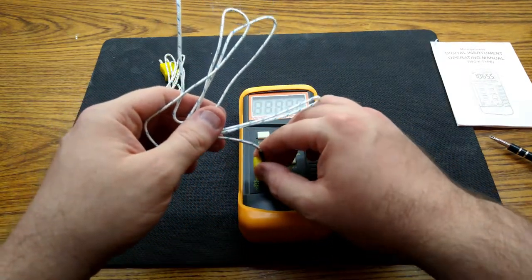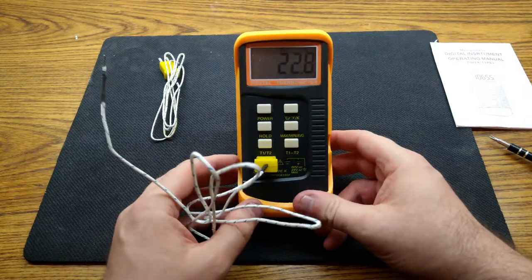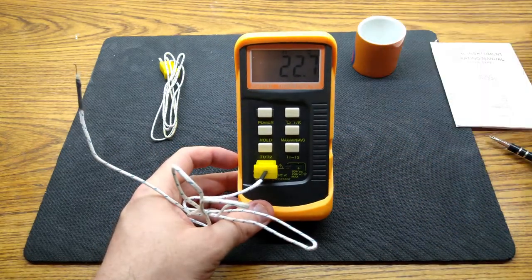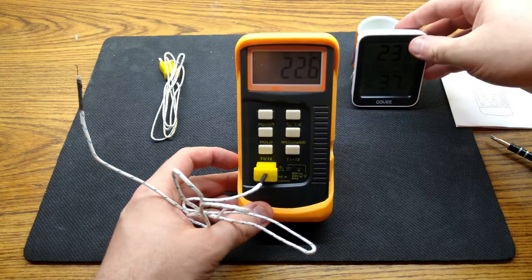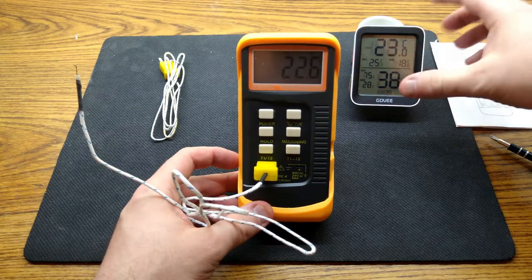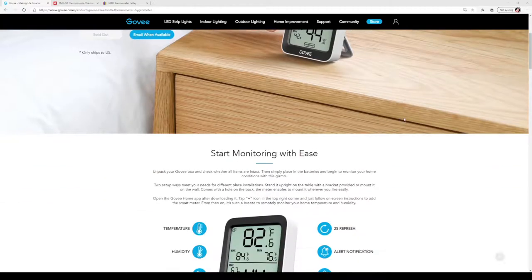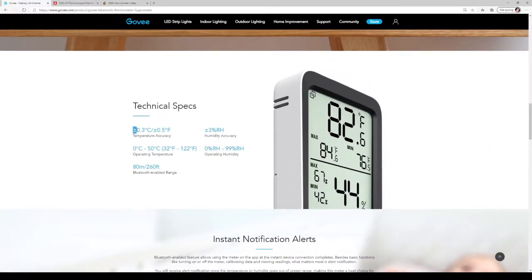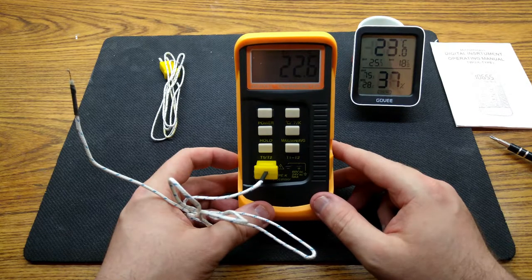When you plug it in, the display quickly changes to display the temperature. If I go ahead and compare it to the temperature reported from my Gove H5070 thermohygrometer, which is a reputable brand and has an accuracy of plus or minus 0.3 degrees Celsius, we can see that the 6802 is accurate.